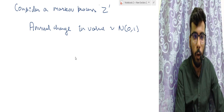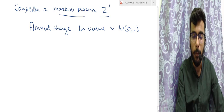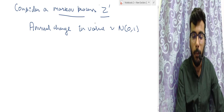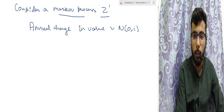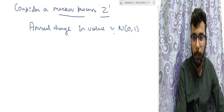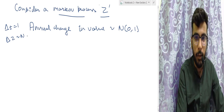Let's start off with our model. Consider a Markov process Z — the past does not matter and the future can be completely modeled based on the present. Let's say this process Z has an annual change in value with a normal distribution with mean 0 and variance 1. So when the change in time equals 1, the change in Z has a normal distribution with mean 0 and variance 1.